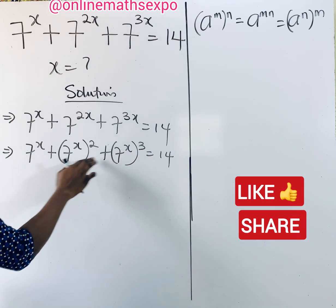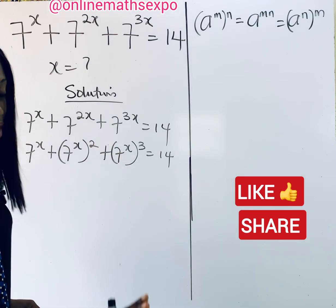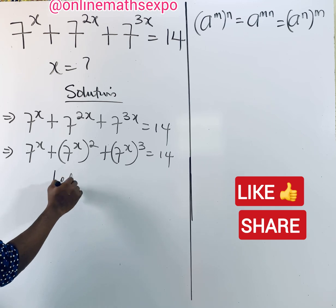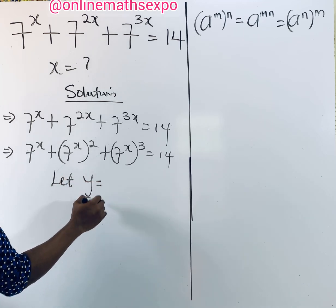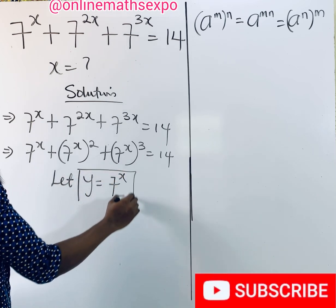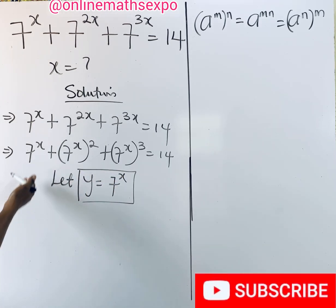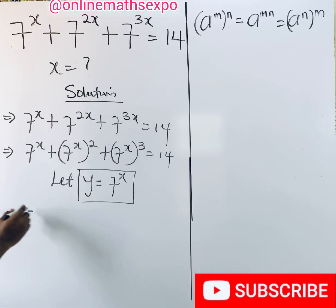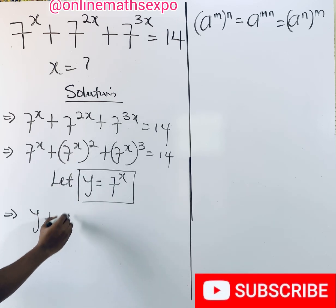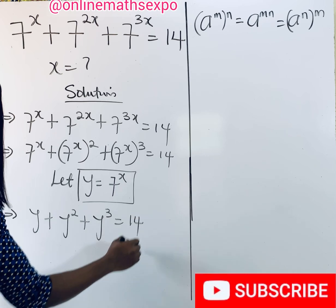Observe that 7 to the power of x is common, so we choose another variable to replace it for easy solving. Let y be equal to 7 to the power of x. Anywhere you see this expression, replace it with y.